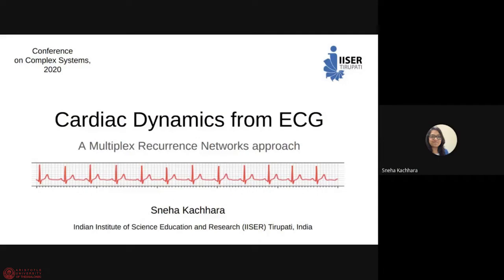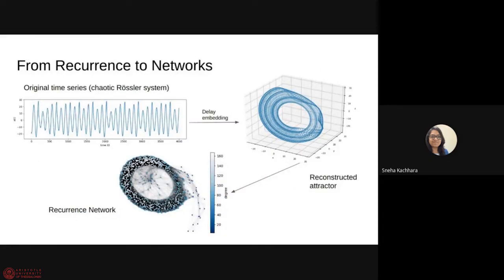Hello everyone. I'm Sneha Kachhara. I'm a PhD candidate at Indian Institute of Science Education and Research, IISER Tirupati from India and today I would like to discuss a really interesting problem which is to analyze cardiac dynamics from ECG and we use what is known as a multiplex recurrence network framework for it. So coming to the recurrence networks, suppose you have a time series, let's say for Rossler system which is in chaotic regime, what you can do is you can construct the attractor in phase space using delay embedding and then you can analyze which pair of points are close by. You can imagine a network in which every node is corresponding to the point in the attractor and two nodes are connected if corresponding points are close by on the attractor.